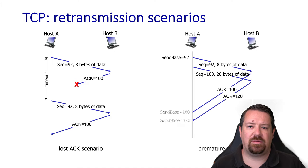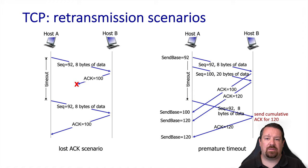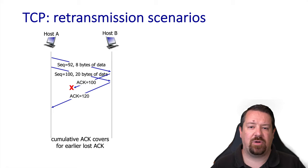In the case of a premature timeout, Host A sends two packets — the first with 8 bytes and the second with 20 bytes. However, the timeout expires before the ACKs arrive back, and it resends the first packet. Note that the receiver always sends the highest cumulative ACK value that applies. So even though it just got a packet with bytes 92 through 99, it sends 120 because that is the highest number of in-order bytes received at that point. This cumulative ACK catches up at the sender, so it won't need to resend any other duplicate packets. In another variant, if the first ACK is lost but the second ACK arrives shortly thereafter, because ACKs are cumulative it doesn't matter — the sender knows both packets arrived and can continue sending new data.